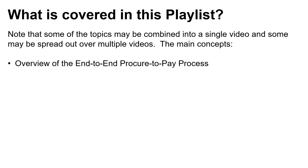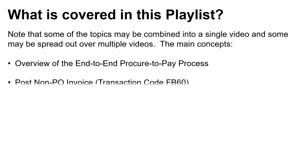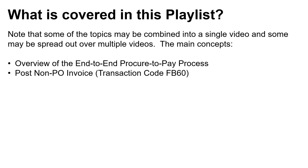First up is an overview of the end-to-end Procure-to-Pay process. We'll then go through the most common tasks in the Accounts Payable process, starting with Post Non-Purchase Order Invoice, transaction code FP60. A non-purchase order invoice is one where a purchase order is not referenced.